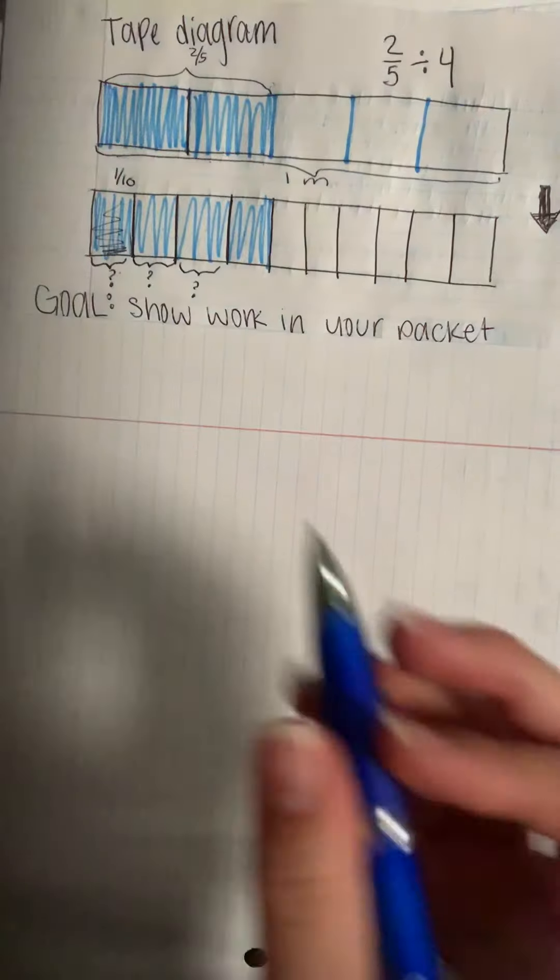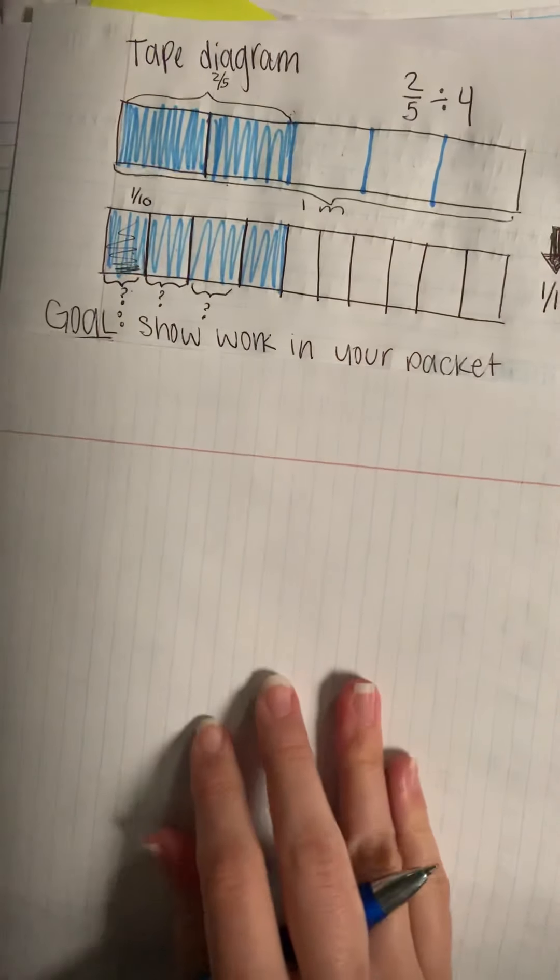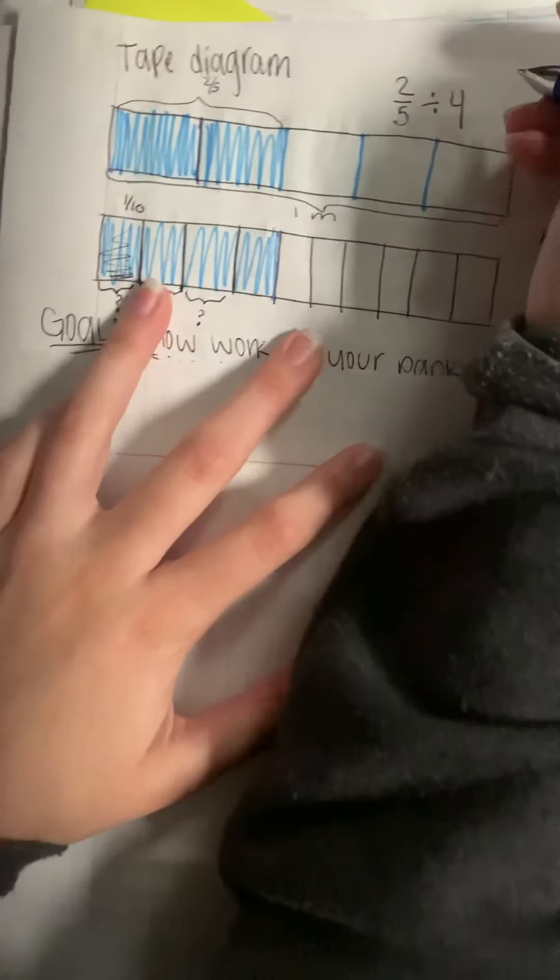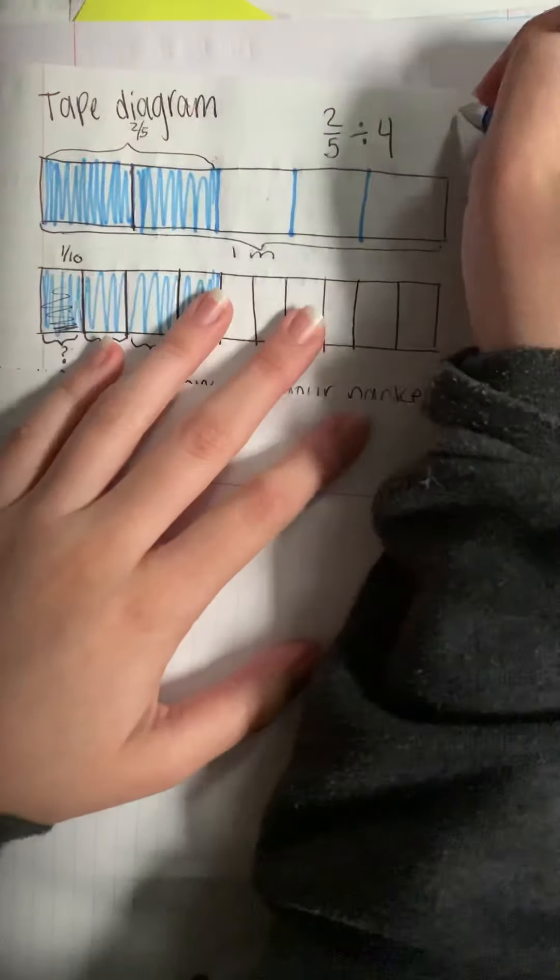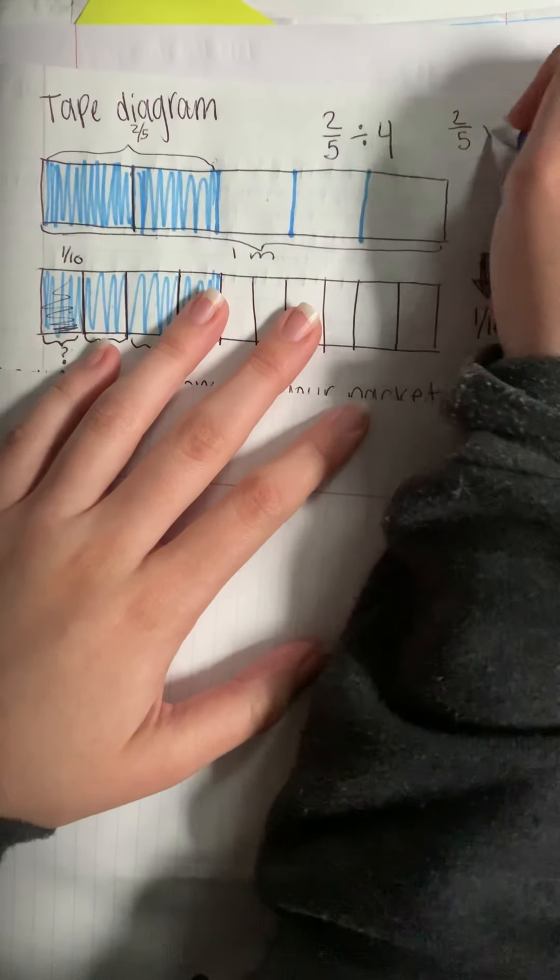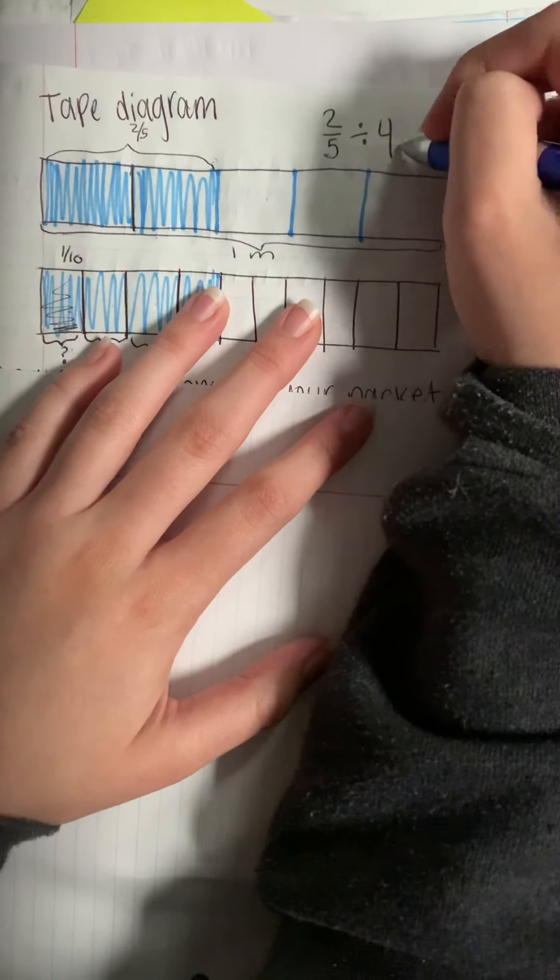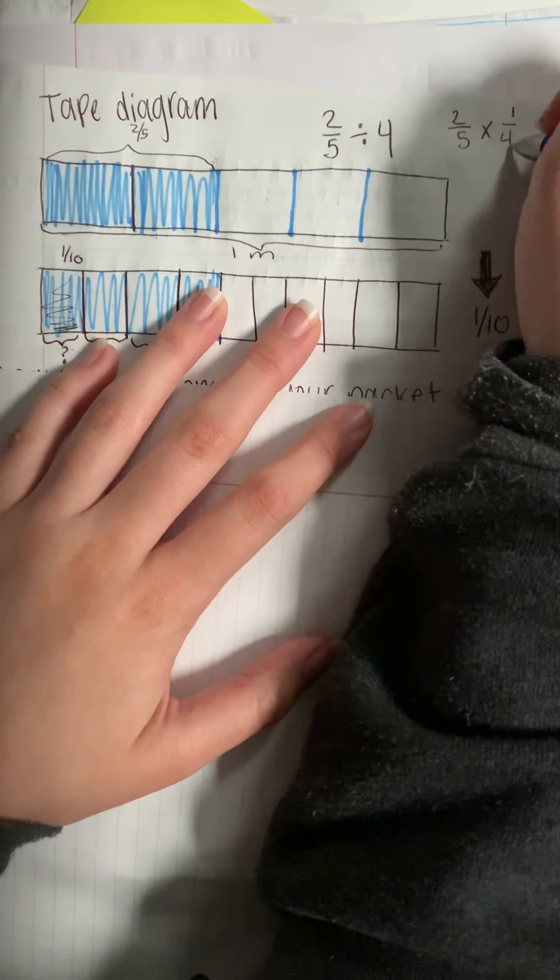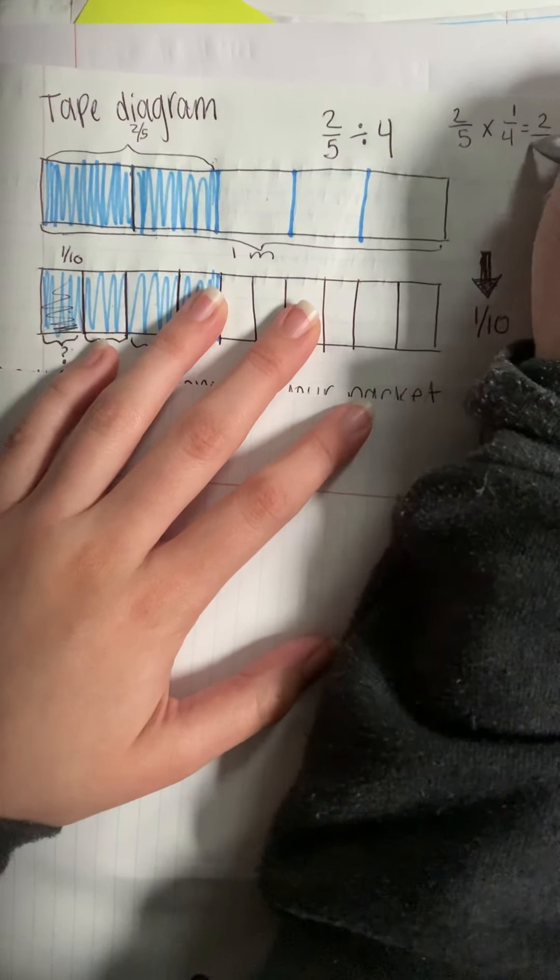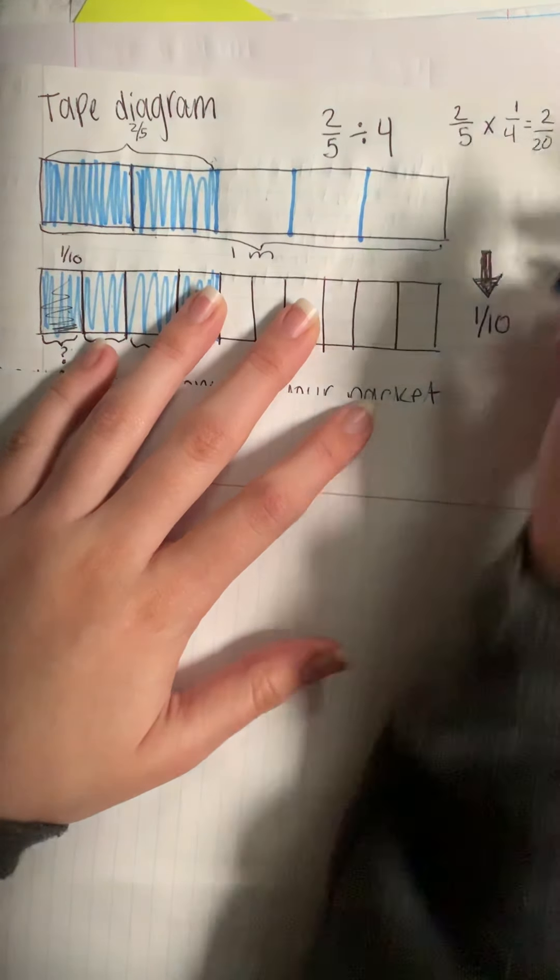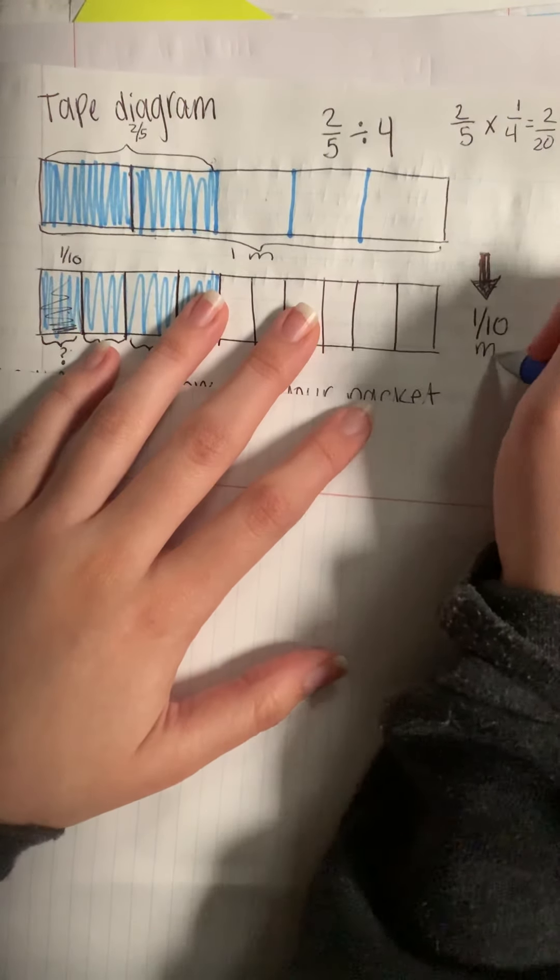So each chord is one-tenth of a meter long, and we can check that using our keep change flip method. Keep the first fraction the same, change our sign to division, to multiplication, and then flip four over one becomes one over four, two over 20 can be reduced. If we divide by two, divide by two, to one over 10 meters.